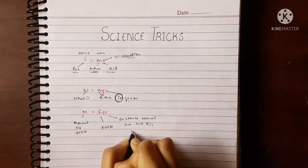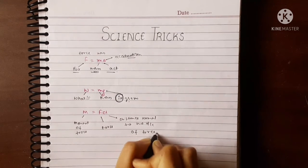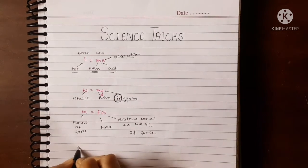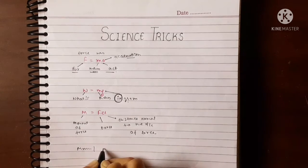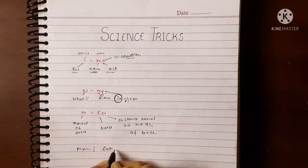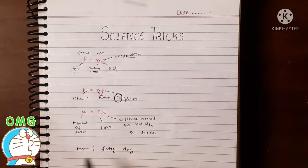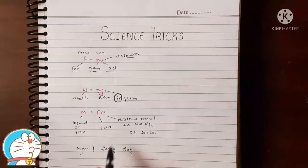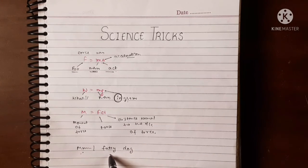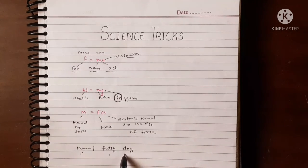You can remember this formula by 'mmm fat' or 'fatty dog'. M represents your moment of force, f represents your force, and d represents your distance normal to the line of force.